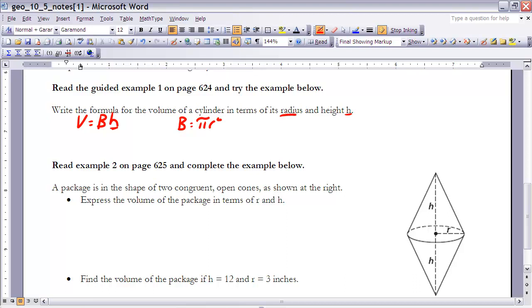Well, that means instead of base, I'm going to put in pi r squared. If I plug that in for base, then I will have my volume formula in terms of the radius and the height. So the volume would be equal to pi r squared h. This represents the formula that we're looking for.